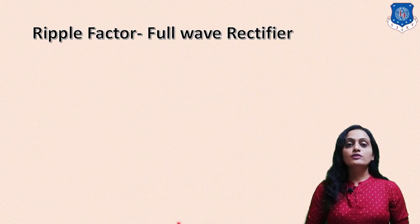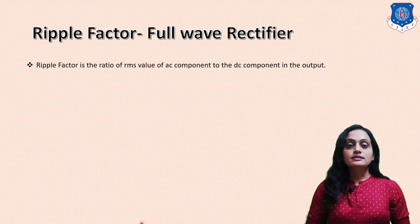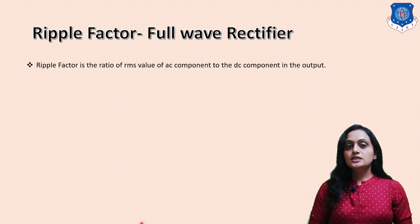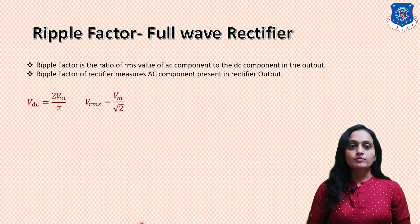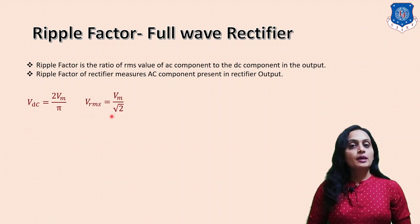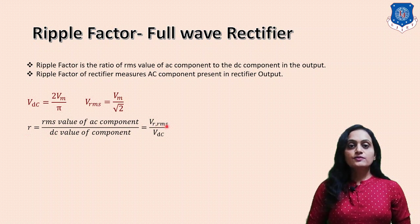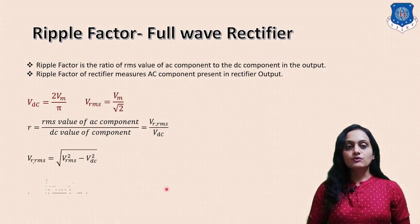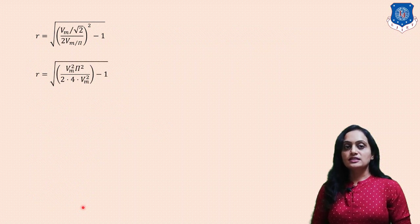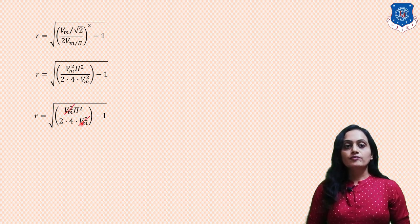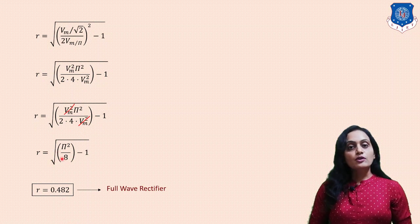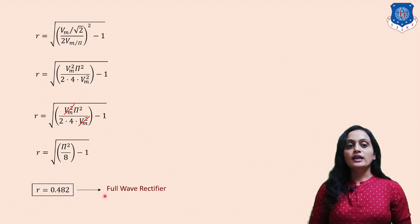Now we will find the ripple factor for the full wave rectifier. The ripple factor is the ratio of the RMS value of the AC component of the rectifier output to the DC component. For the full wave rectifier, VDC = 2Vm/π and Vrms = Vm/√2. VrRMS = √(Vrms² − VDC²). Substituting into the ripple factor equation and solving gives ripple factor = √(π²/8 − 1) = 0.482.